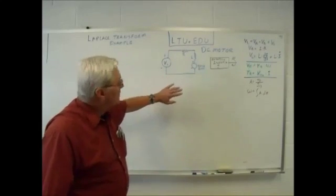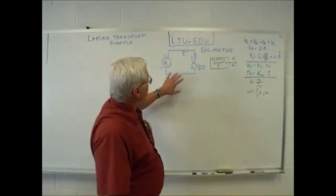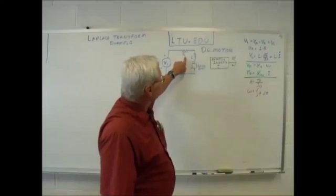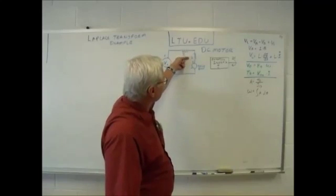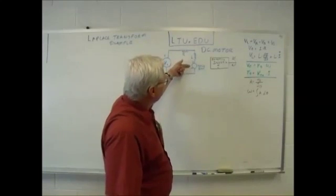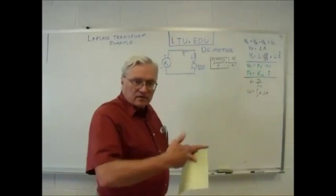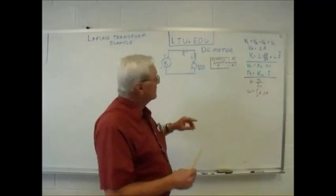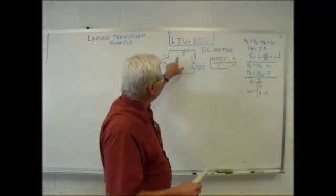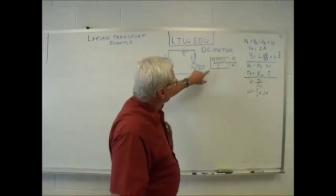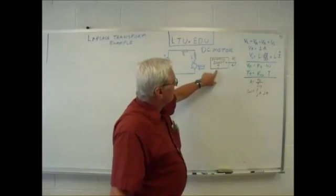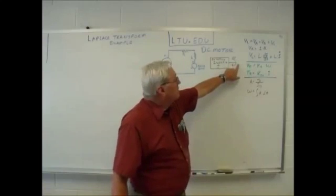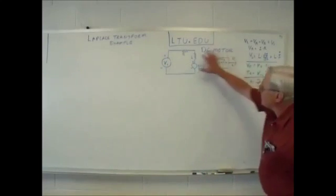Just to review the DC motor: we have the electrical side of the motor here. We have a voltage source. The windings in the motor have some resistance. There's an inductance in the windings. There's the back EMF generated as the windings rotate in the magnetic field of the permanent magnet DC motor, so it generates a voltage. On the mechanical side, we have a rotating inertia called J, and it rotates at some speed, omega.